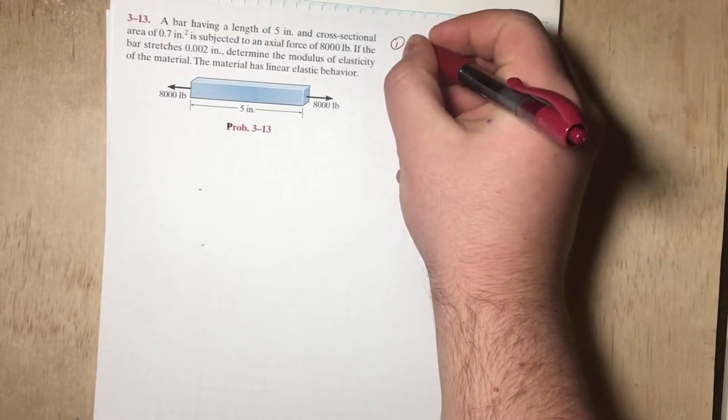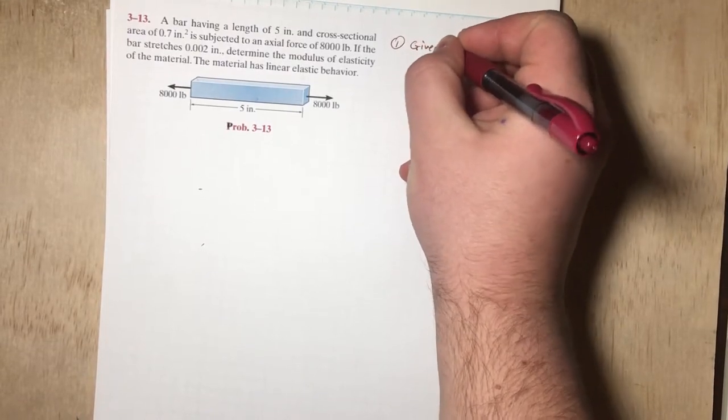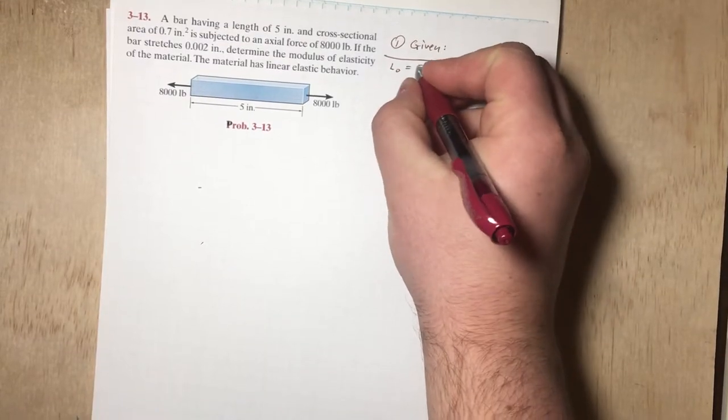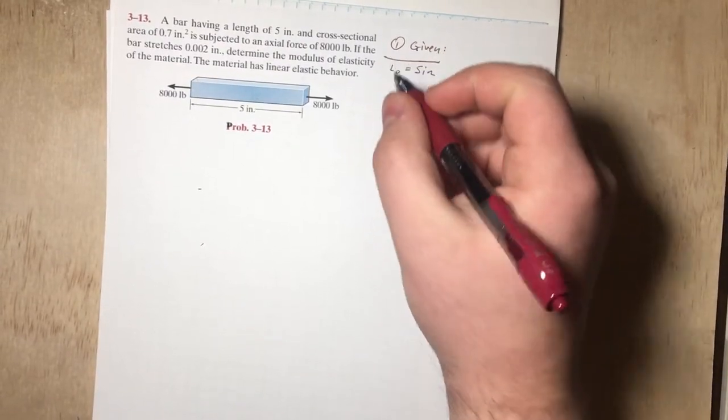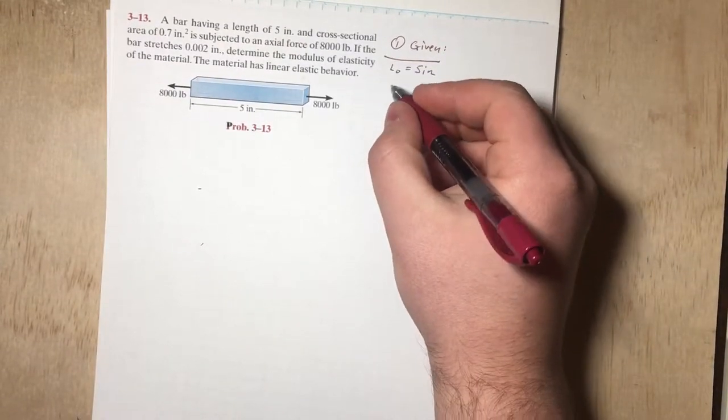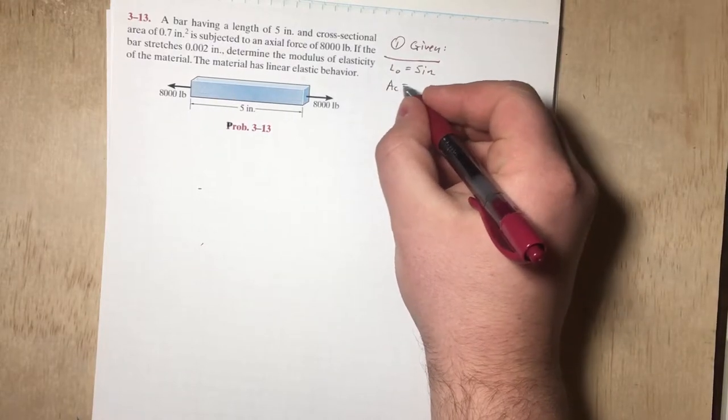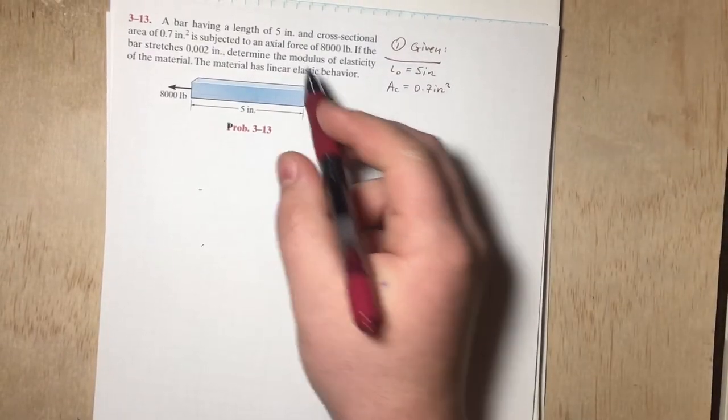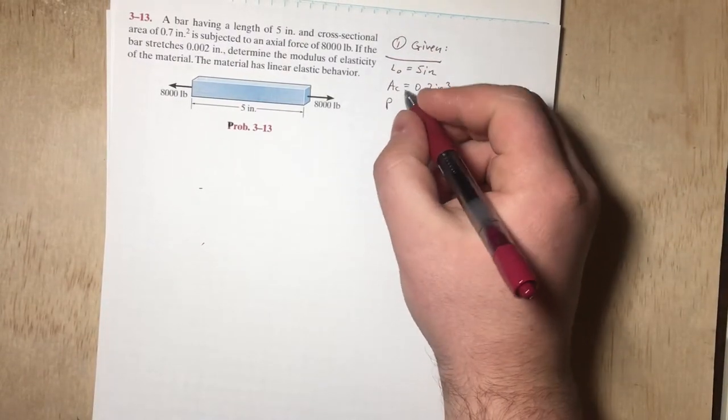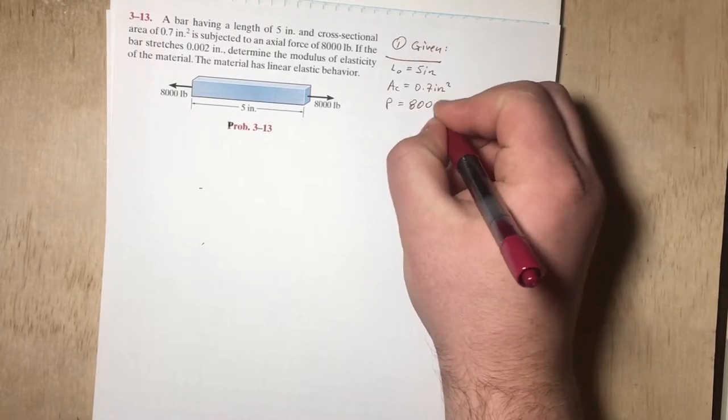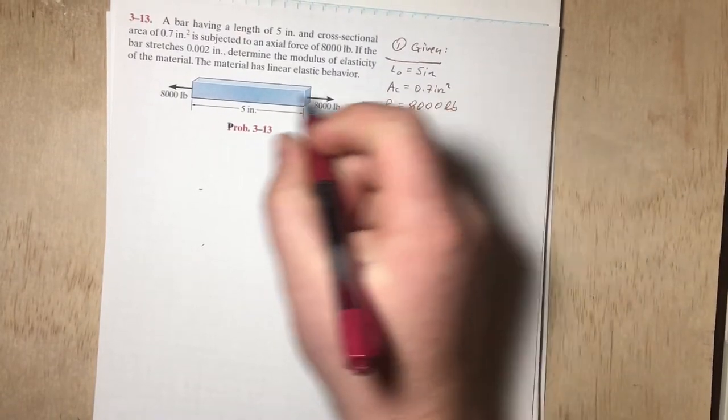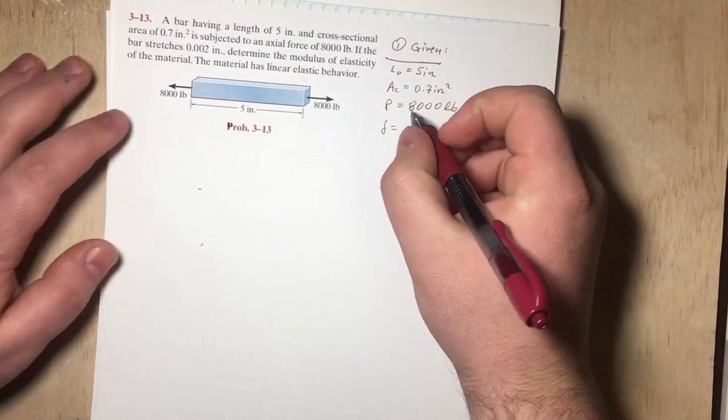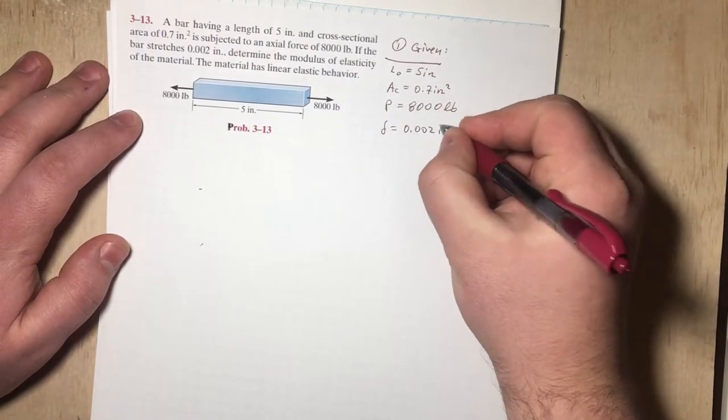So as always, let's start with what is given in the problem. We're given that the length is 5 inches, our initial length. We also know that the cross-sectional area is going to be 0.7 inches squared. Also, our axial force is 8,000 pounds. And the delta, so the stretch, is going to be 0.002 inches.